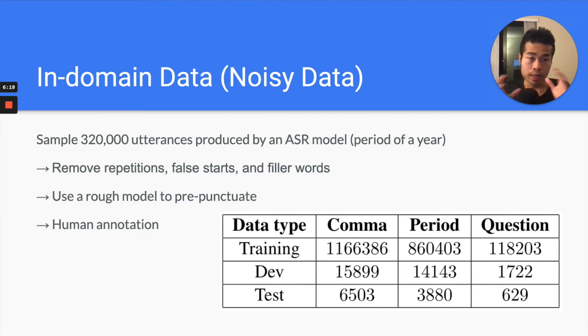So this is in-domain data, our in-domain data. Our in-domain data, because our company transcribes phone conversations, so in-domain is basically phone conversations, especially for business usage. So we sample 320,000 utterances, they're produced by our ASR model over a period of year. And we remove some repetitions, false starts and filler words, but not all. There's no perfect model they can remove that. We probably remove maybe half of them.